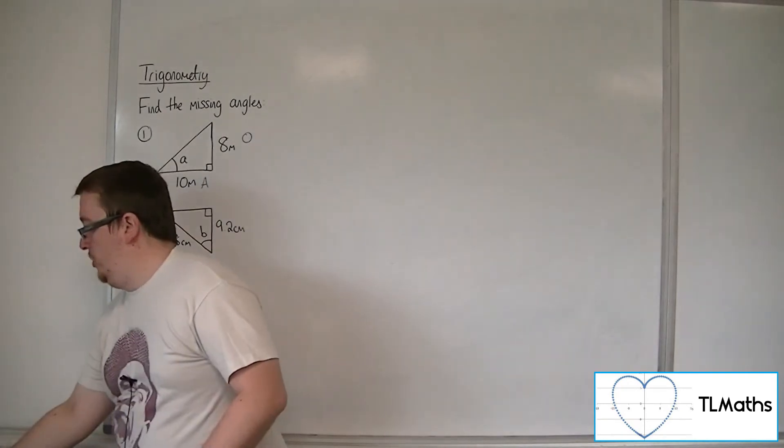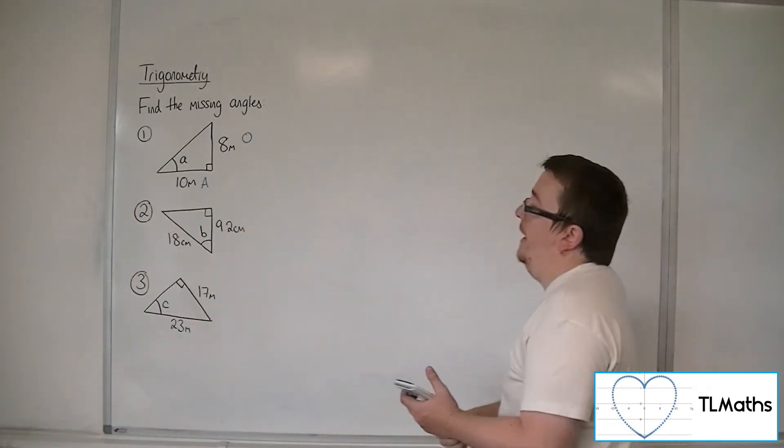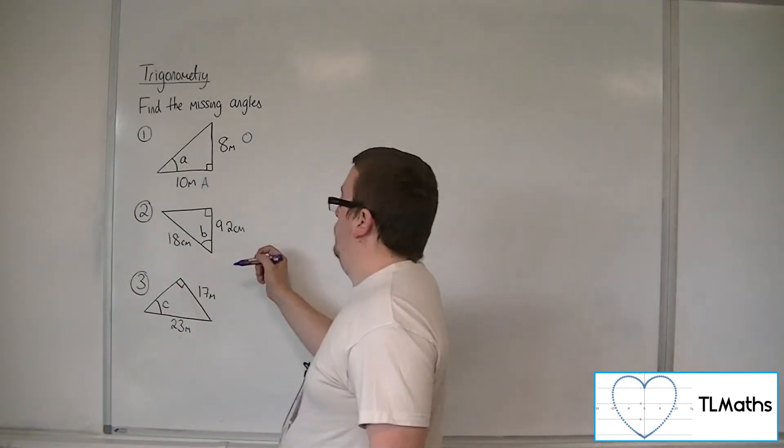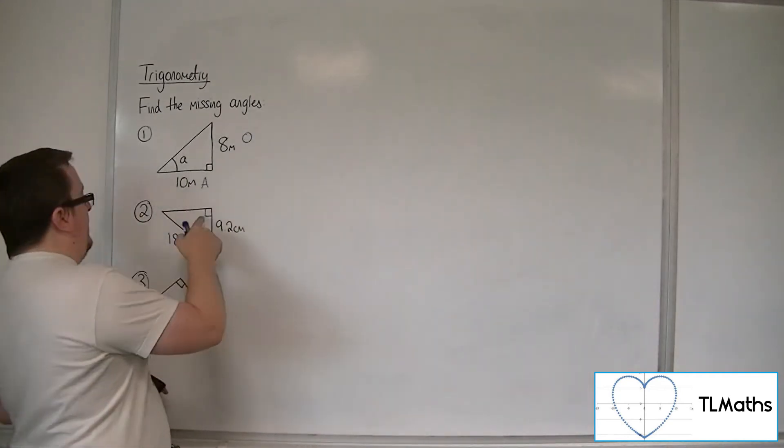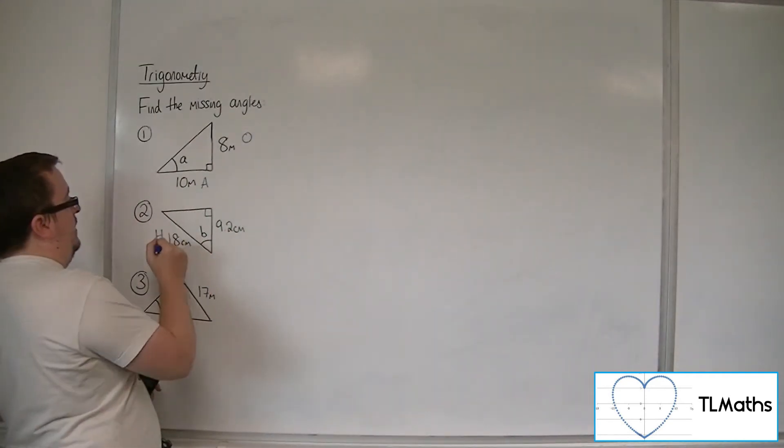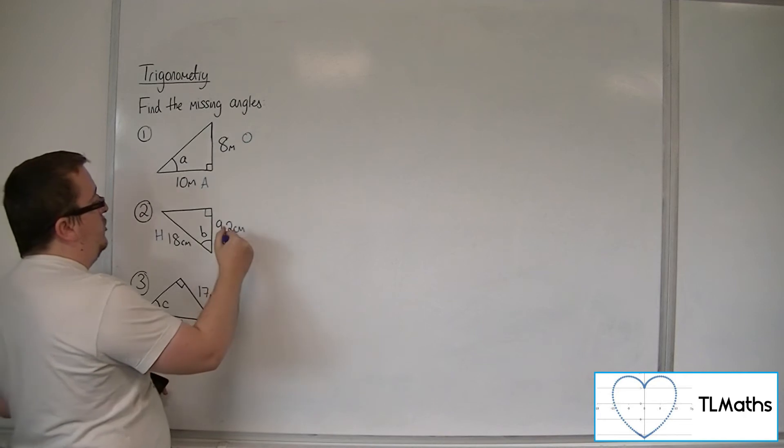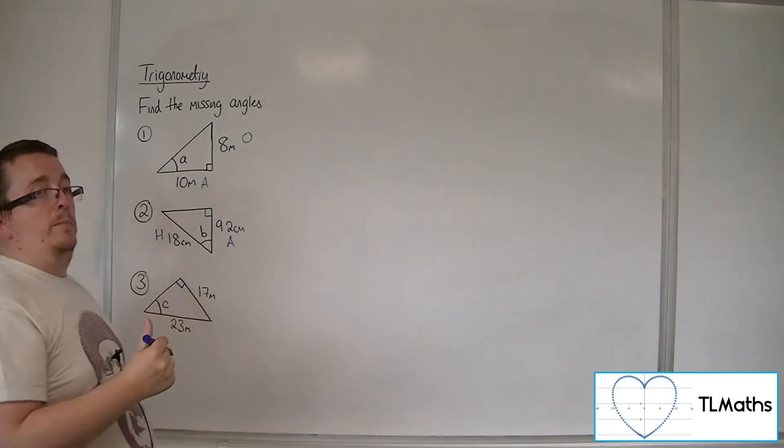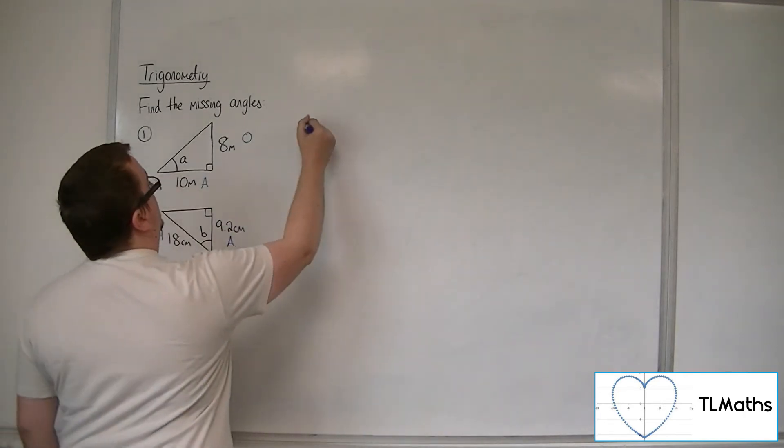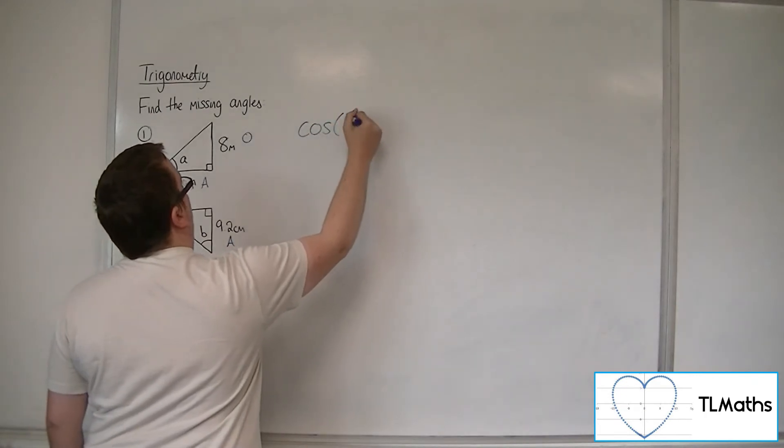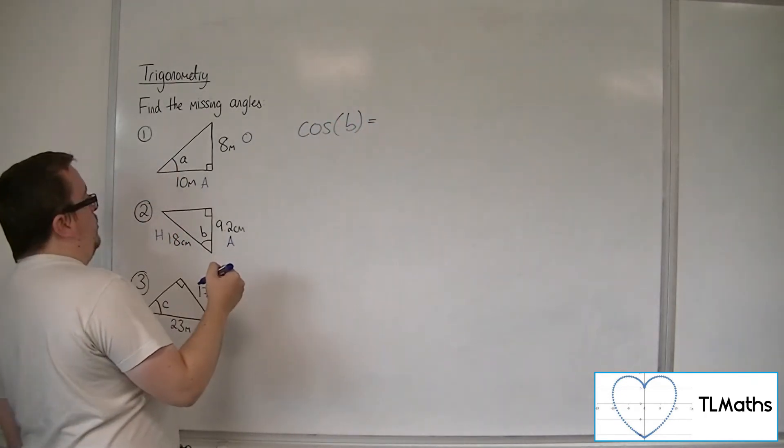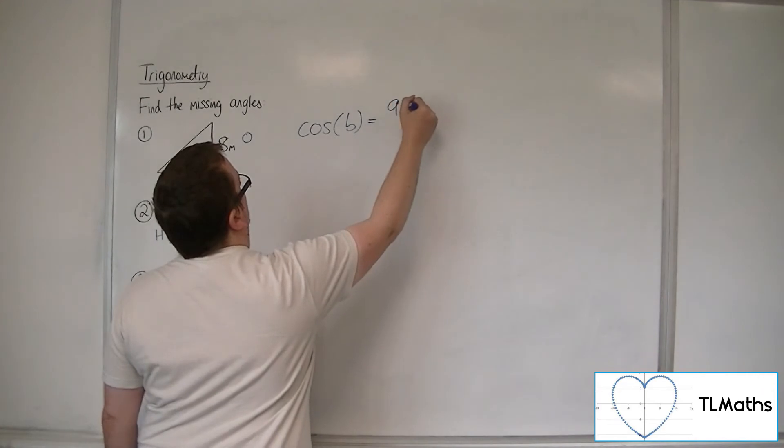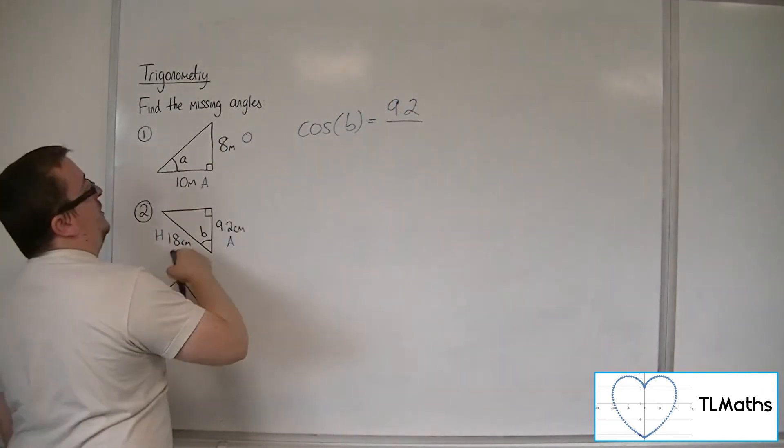So let's have a look at number 2. So we have, what have we got here? Well, we've got the hypotenuse, the side that is opposite the right angle. We've got the adjacent. So that means that we're going to use cosine. Cosine of the angle B will be equal to the adjacent over the hypotenuse, 18.